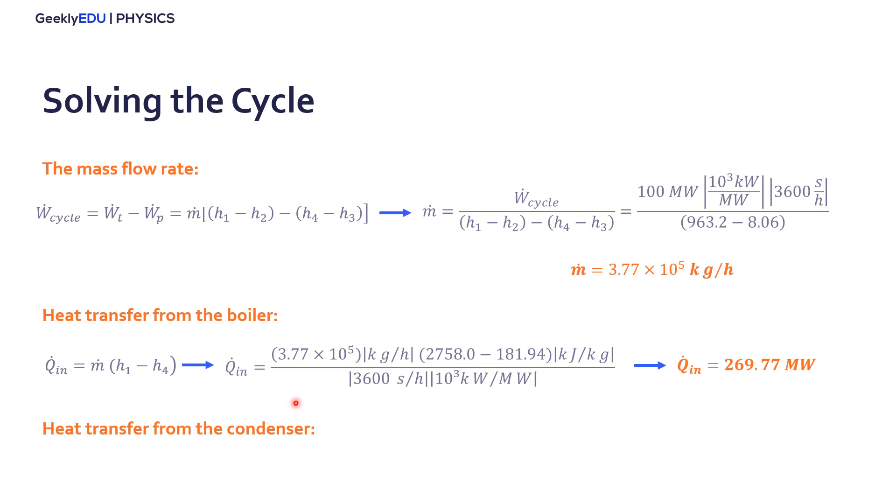From the condenser, the heat transfer out of our cycle is the same thing. We have the enthalpies already, and we find our heat transfer from the condenser out of the system.